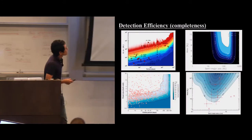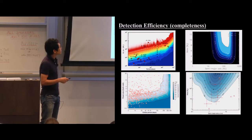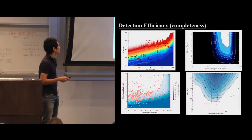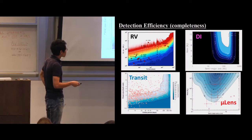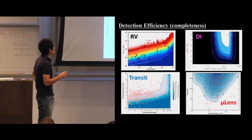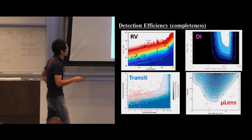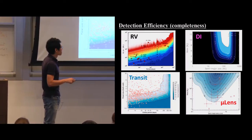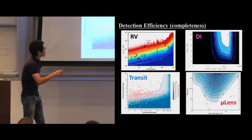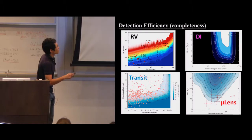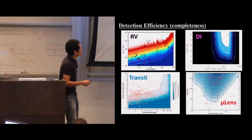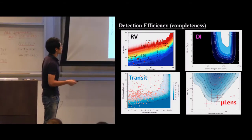These plots show detection efficiency for transit, RV, direct imaging, and microlensing. Transit and RV are sensitive to inner hot planets. Microlensing has sensitivity around and just beyond the snow line. Direct imaging is sensitive further out to cold, massive planets. We need to account for all of these detection efficiencies in any statistical study.